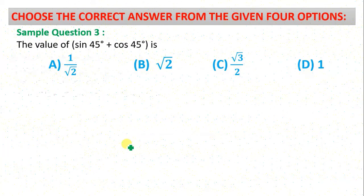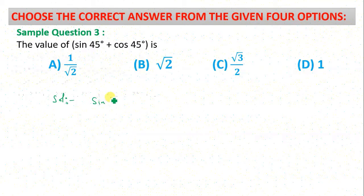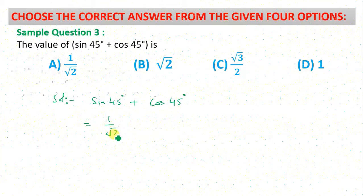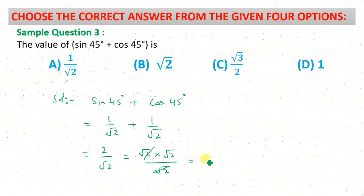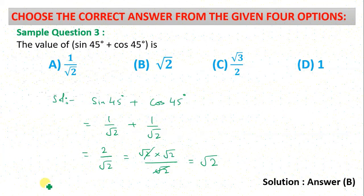Question number 3: sin 45° + cos 45°. We know both have the same value: 1/√2 + 1/√2 = 2/√2. Now 2 can be written as √2 × √2, so the final answer is √2. The correct answer is option B.